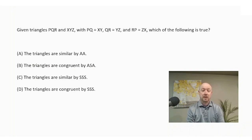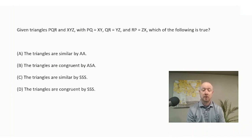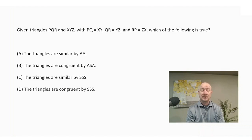Given triangles PQR and XYZ with PQ equal to XY, QR equal to YZ, and RP equal to ZX. Which of the following is true? A, the triangles are similar by Angle-Angle. B, the triangles are congruent by Angle-Side-Angle. C, the triangles are similar by Side-Side-Side. D, the triangles are congruent by Side-Side-Side.